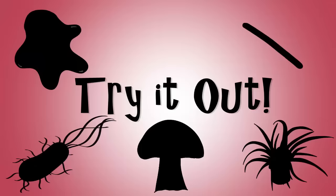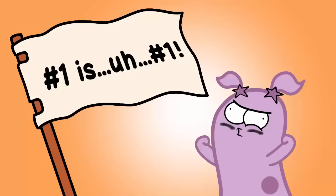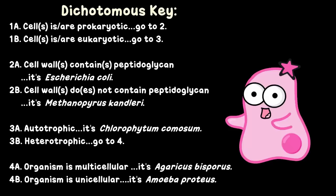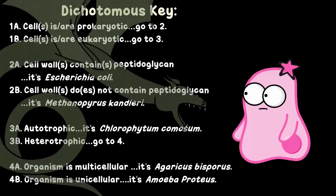Now you can try with the other mystery organisms on our handout. A few big reminders: number 1, always start with number 1 on the key for every organism. Number 2, be careful not to just pick out random phrases in the dichotomous key — there are no shortcuts, you need to go through the sequence. For example, there is more than one organism on this chart that is unicellular in phrase 4B, so if you just picked out that phrase, you'd have more than one organism in that category.